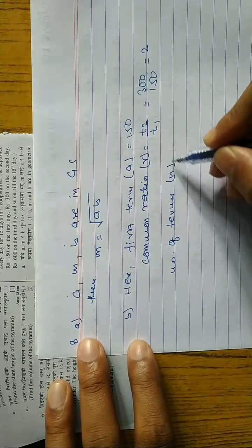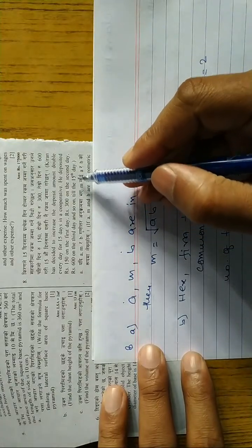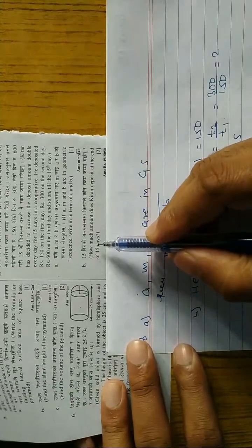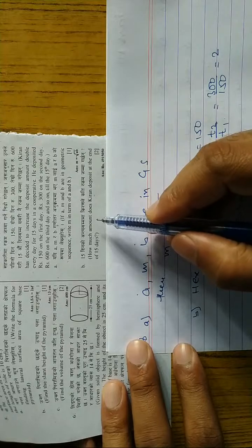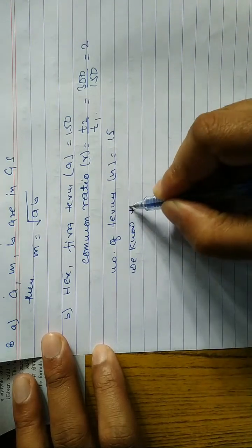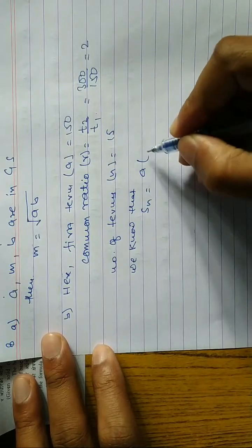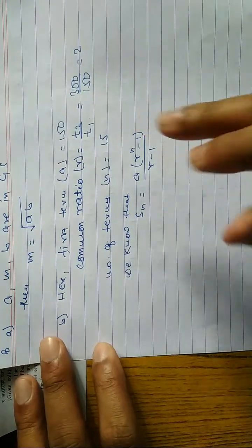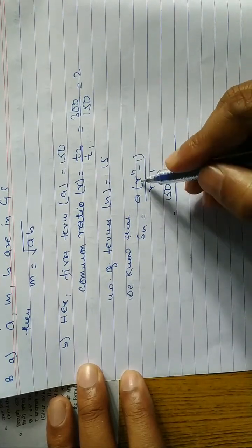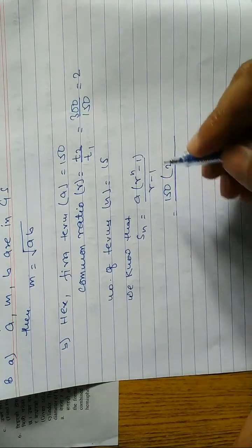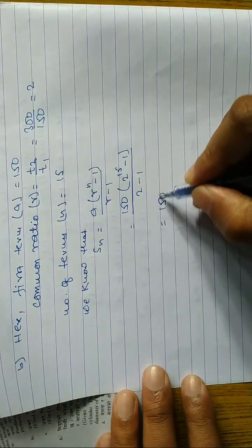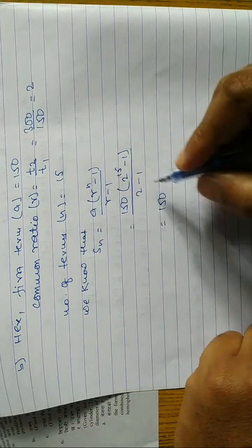We use the geometric series sum formula: Sn = a × (r^n − 1) / (r − 1). Substituting: S15 = 150 × (2^15 − 1) / (2 − 1). Now we calculate 2^15 − 1 = 32,767.